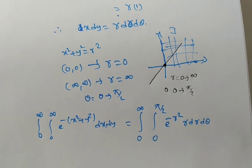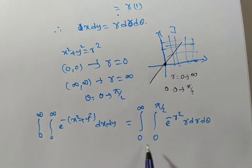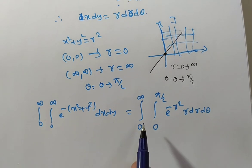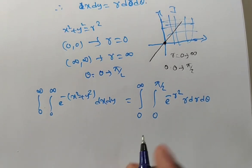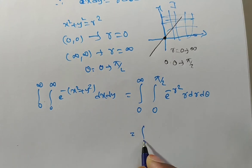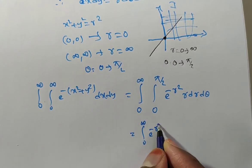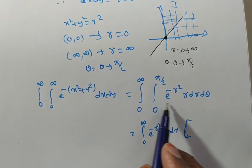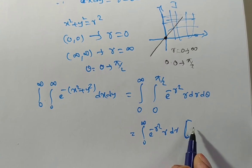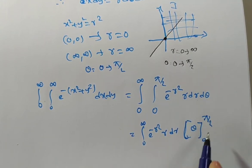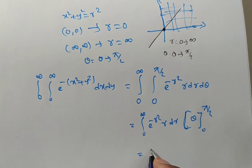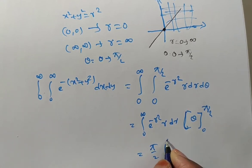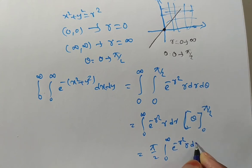Here you observe that the integrand is in terms of r alone, and the limits of r are 0 to infinity while theta limits are 0 to pi by 2 — both limits are independent. So you can do the integration irrespective of order. First, I integrate with respect to theta: the integral from 0 to infinity of e to the power of minus r squared times r dr, multiplied by the integral from 0 to pi by 2 of 1 d theta, which gives pi by 2. So we write pi by 2 times the integral from 0 to infinity of e to the power of minus r squared times r dr.